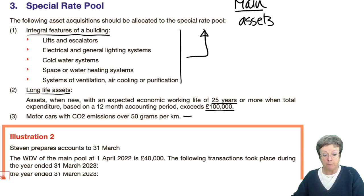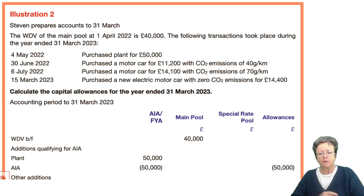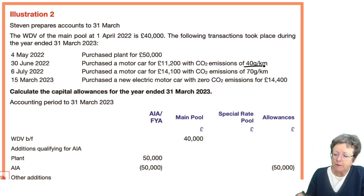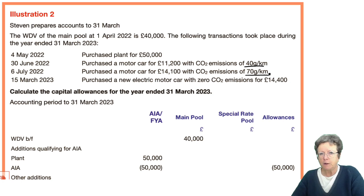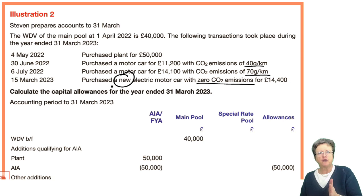Let's have a look at how that looks in an example. Stephen prepares accounts to the 31st of March. The written-down value on the main pool brought forward is £40,000. The following transactions took place during the year to March 2023: in May he bought some plant and equipment; in June, a car with CO2 emissions of 40 grams; in July, another car with bigger emissions; and in March 2023, a new electric car. You can see how the question gives you clear instructions so you can apply the rules and put everything in the correct place.